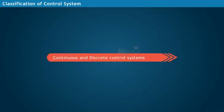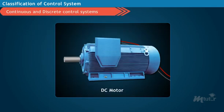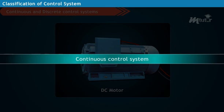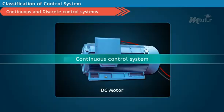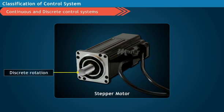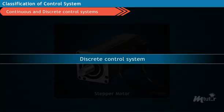Continuous and discrete control systems. Let us consider a DC motor. It is operated with a continuous DC supply. Such a system is called a continuous control system. Whereas, in case of a stepper motor, it is operated with discrete pulses such that it rotates in discrete steps. Hence, such a system is called a discrete control system.